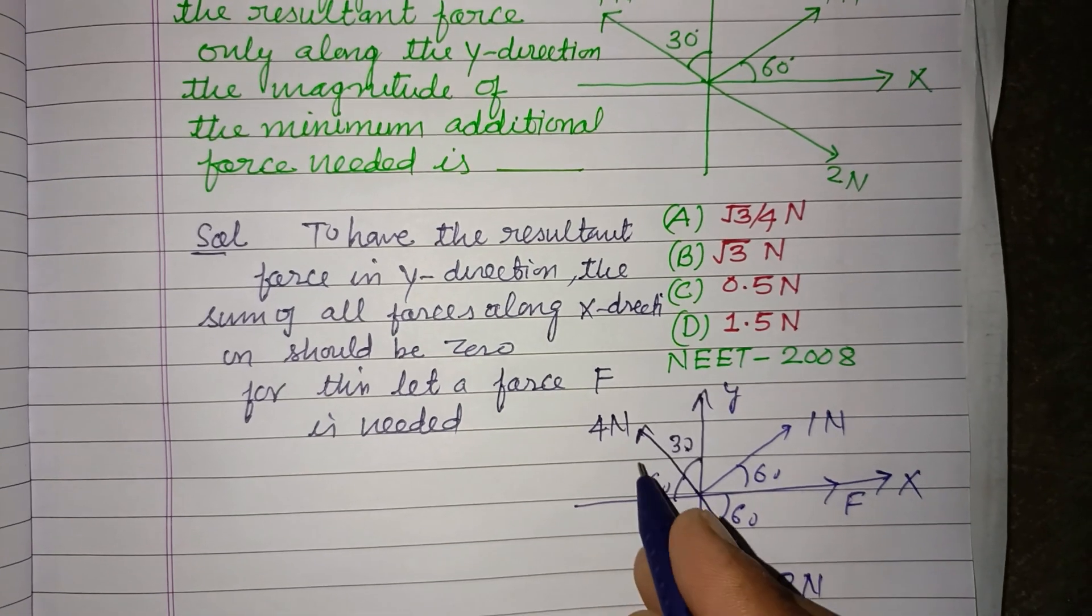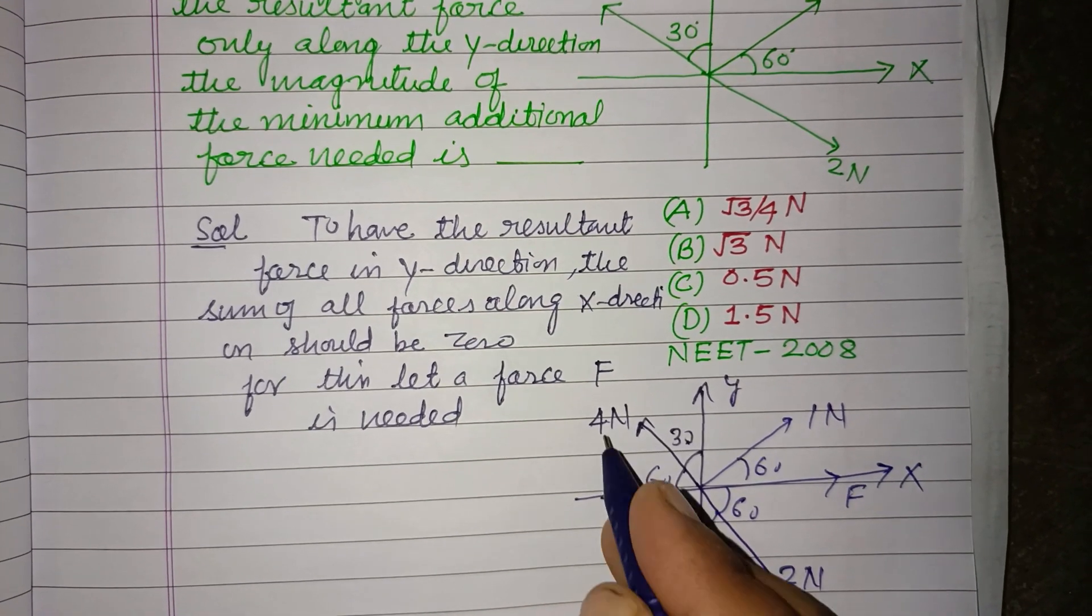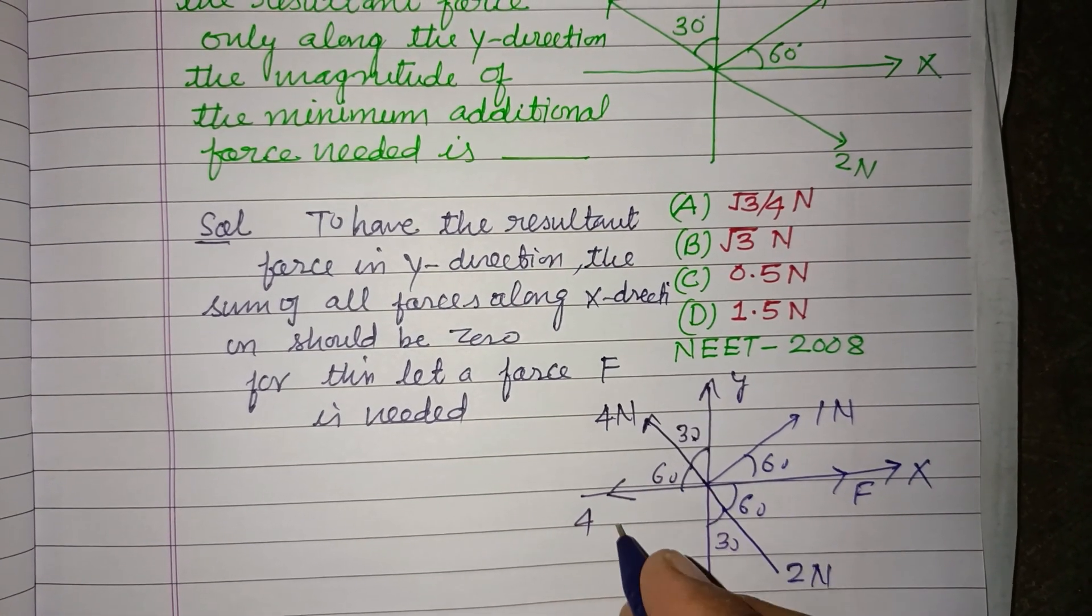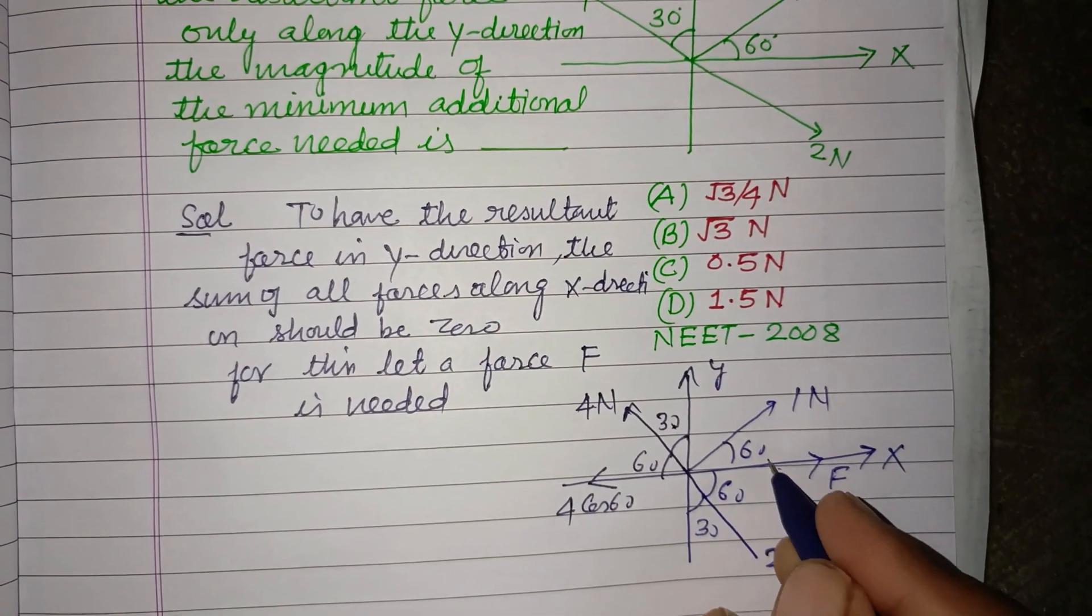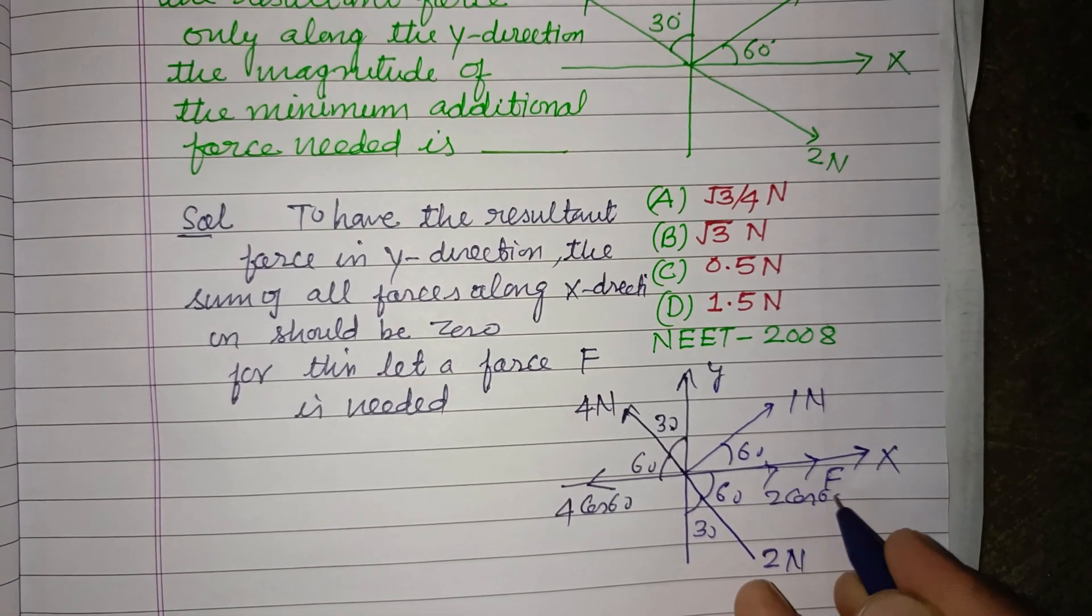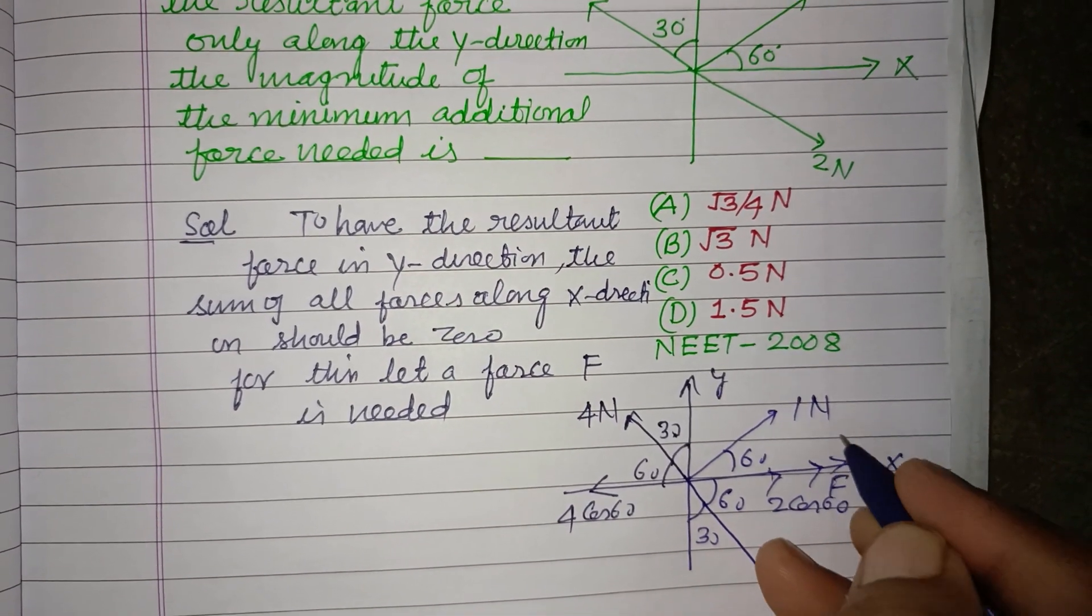If this is 30°, this is 60°. So four Newton in x-direction is 4 cos 60°, here 2 cos 60°, and here 1 cos 60°.